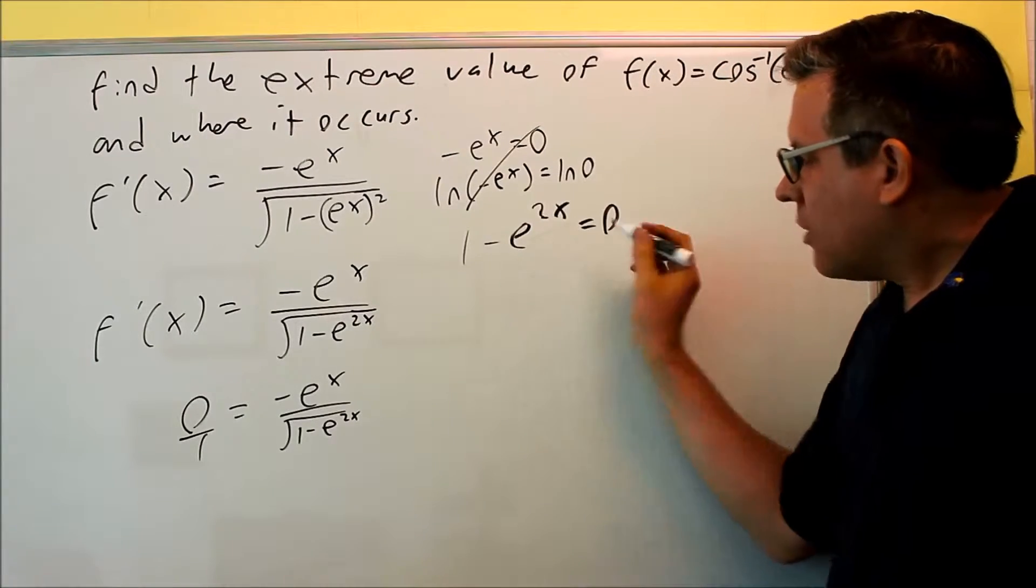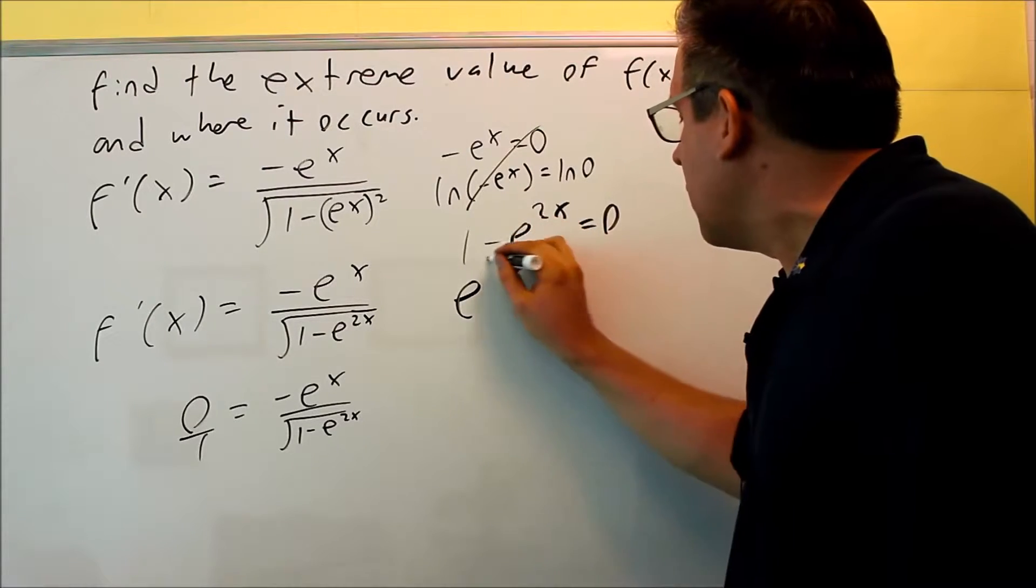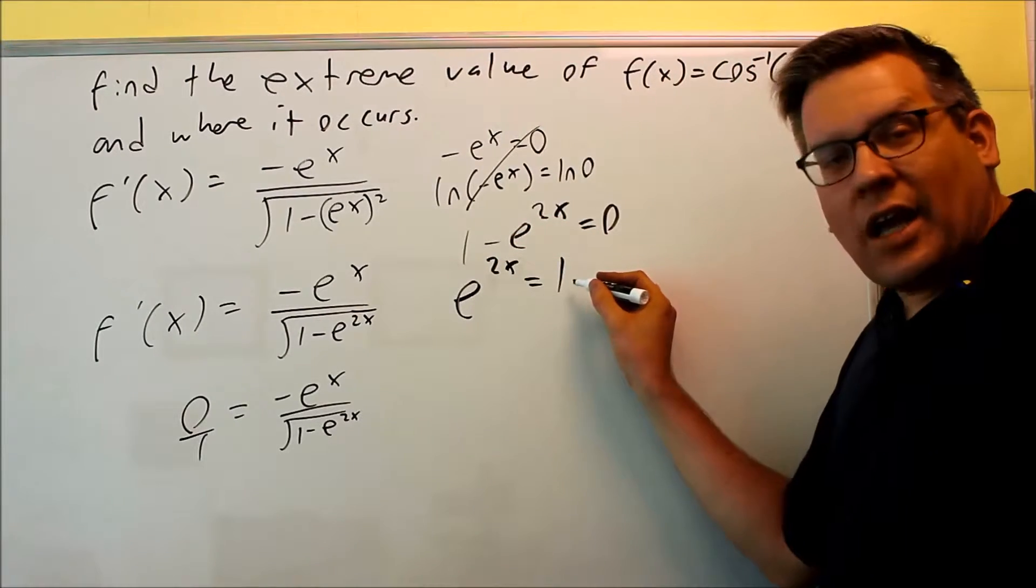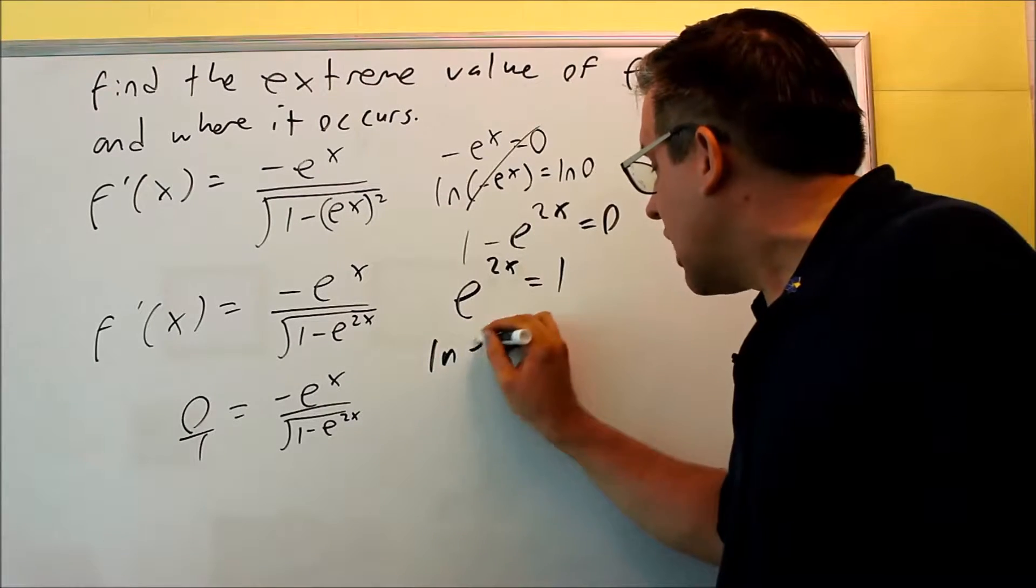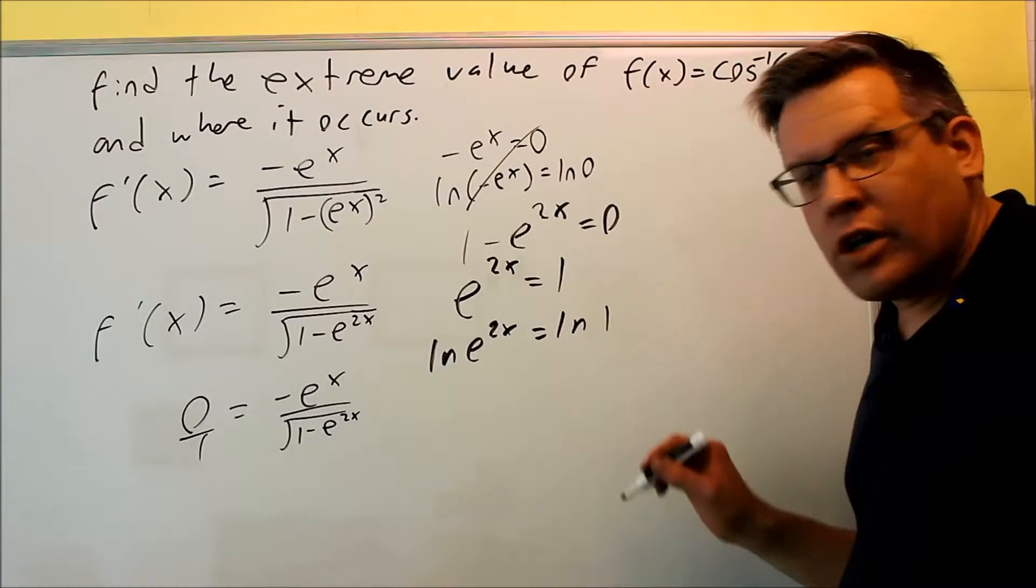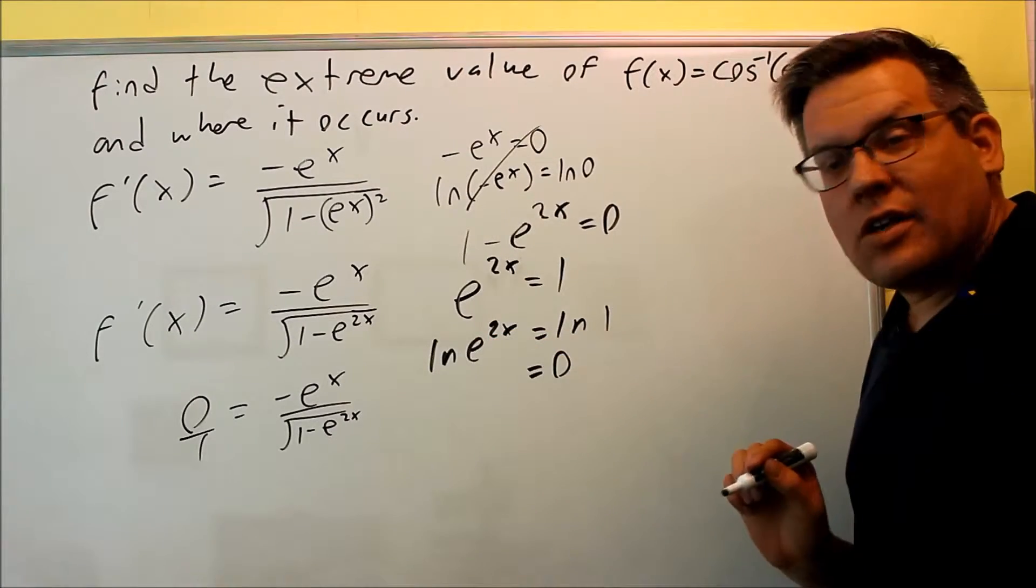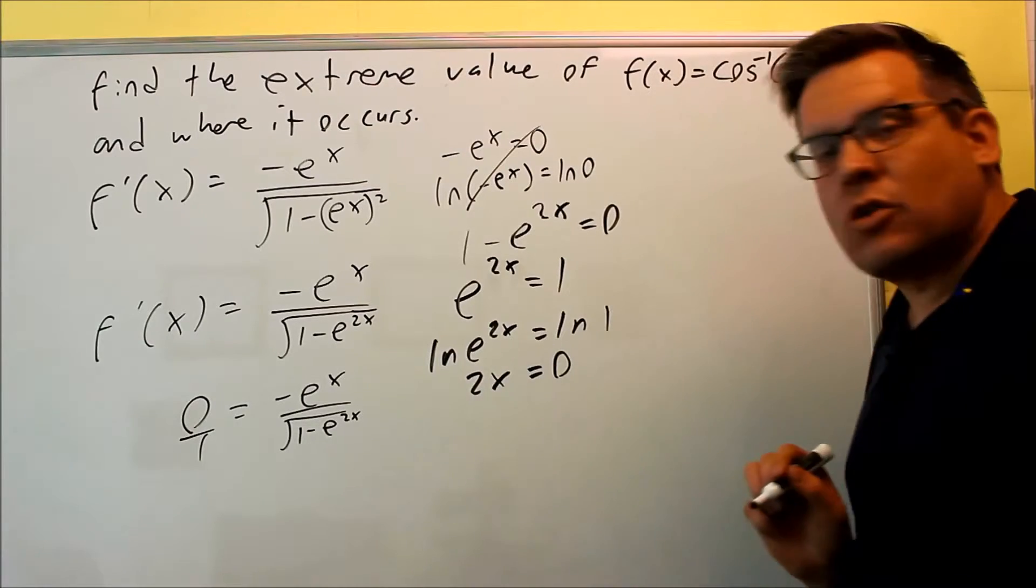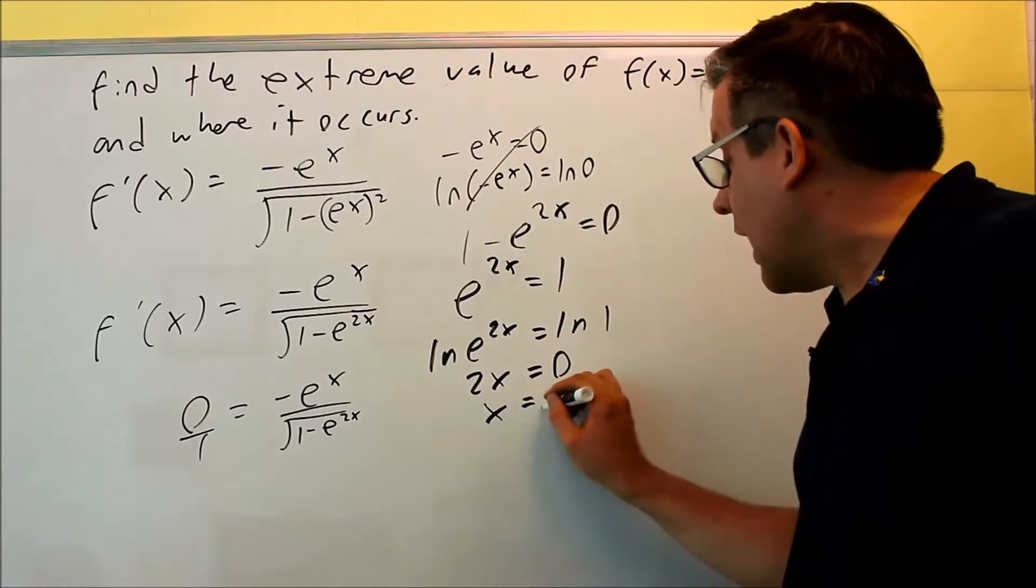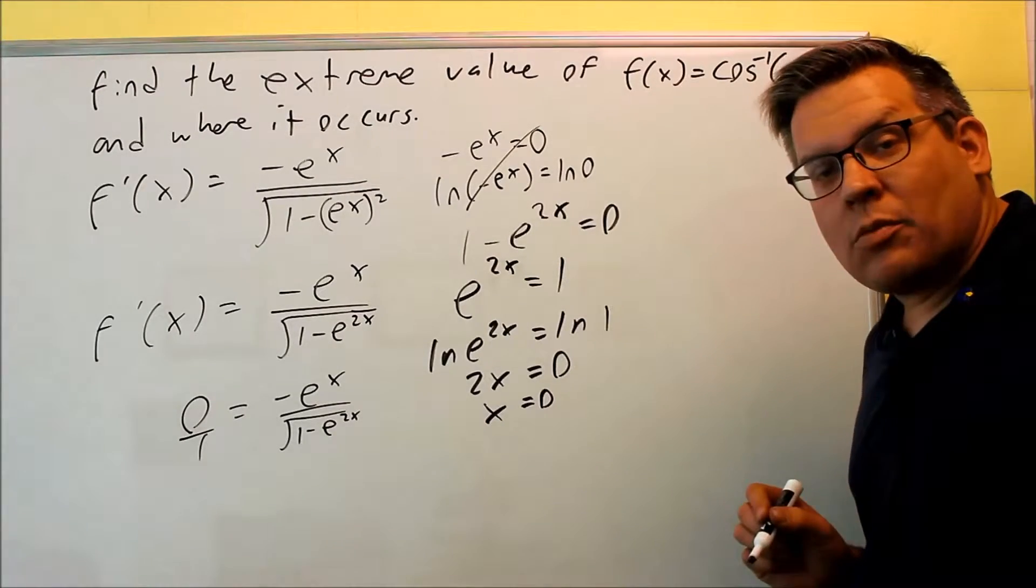So if I rearrange here, I get e to the 2x is going to equal 1. And now this, I am able to take the natural log of both sides because you can take the natural log of 1. Natural log of 1 is going to be 0. And then natural log of e is going to cancel and we get 2x equals 0. And so then, I get x equals 0. So I do get a critical number here for this particular problem.